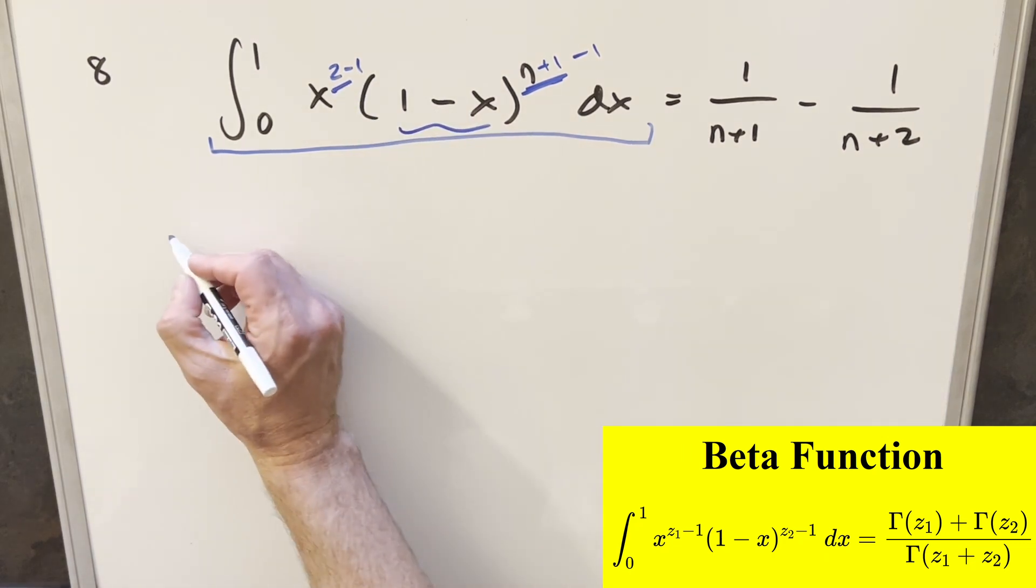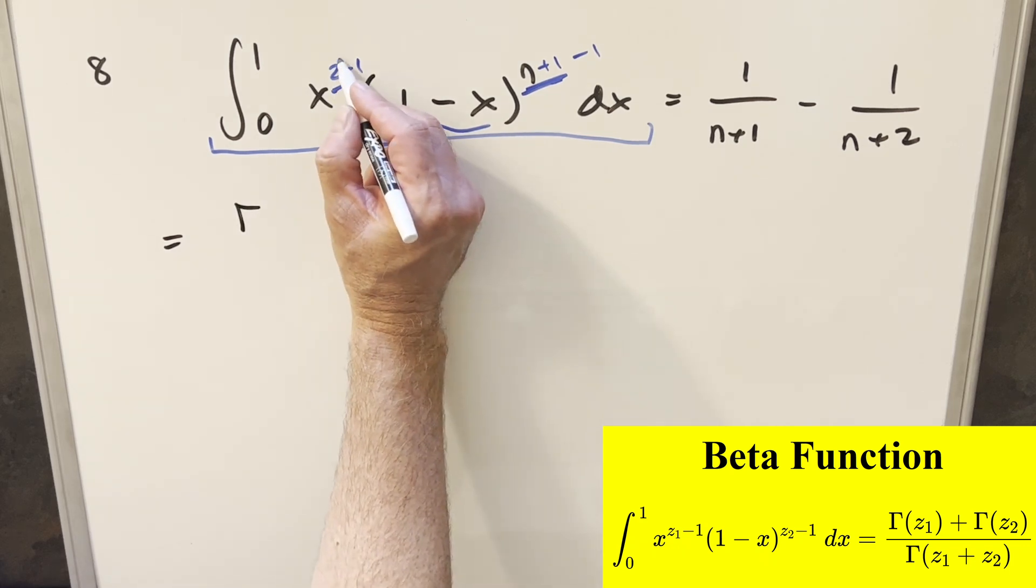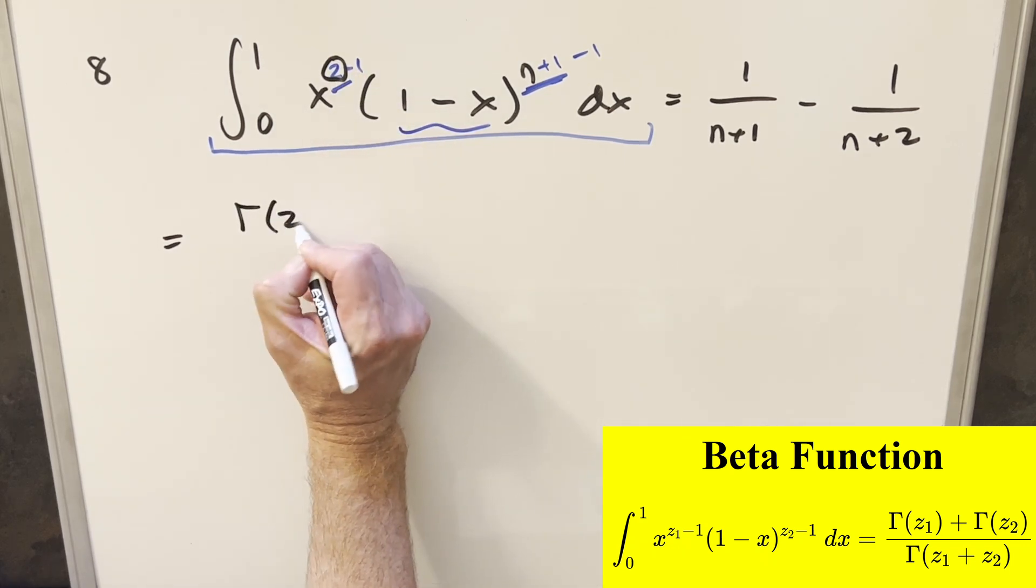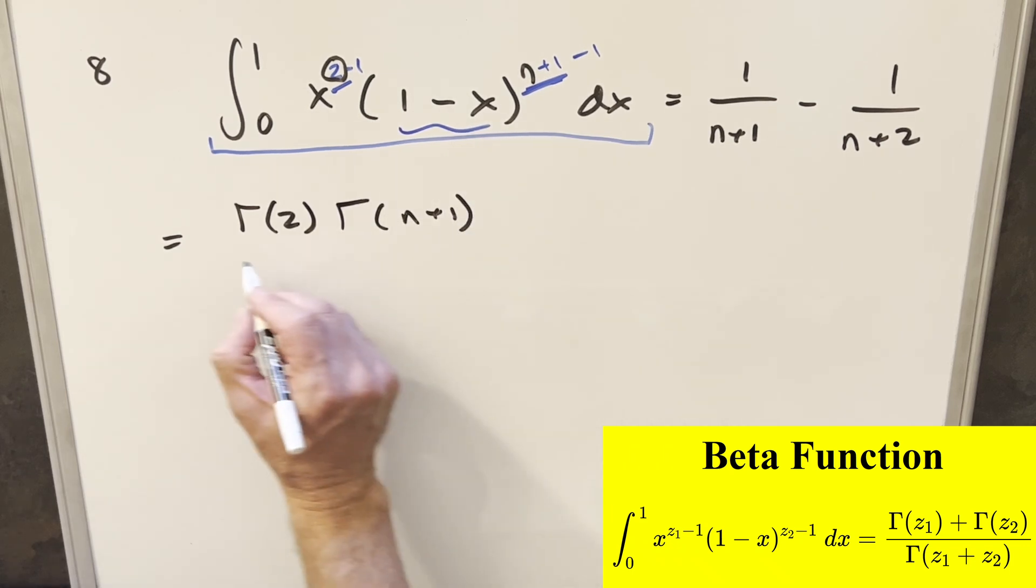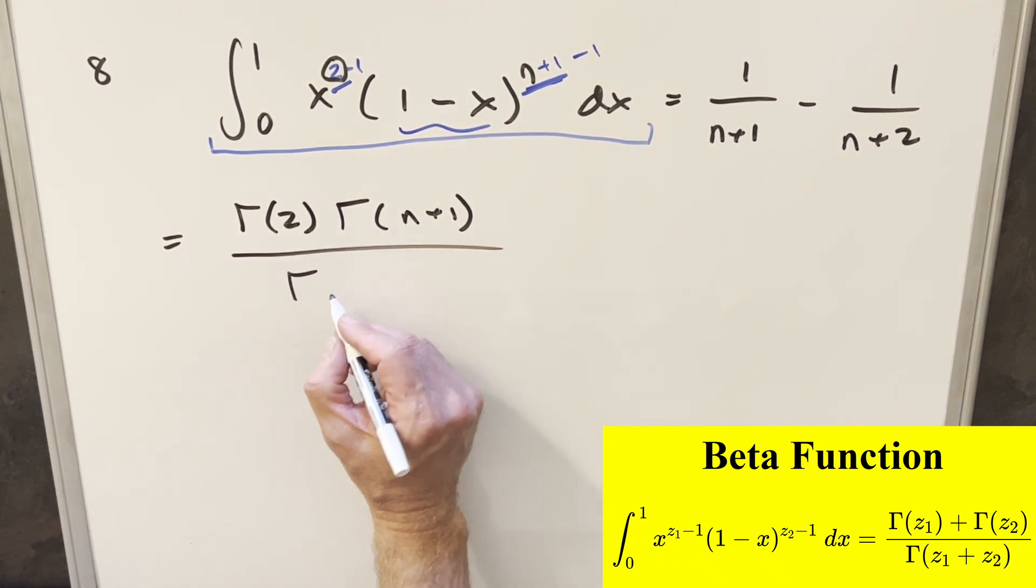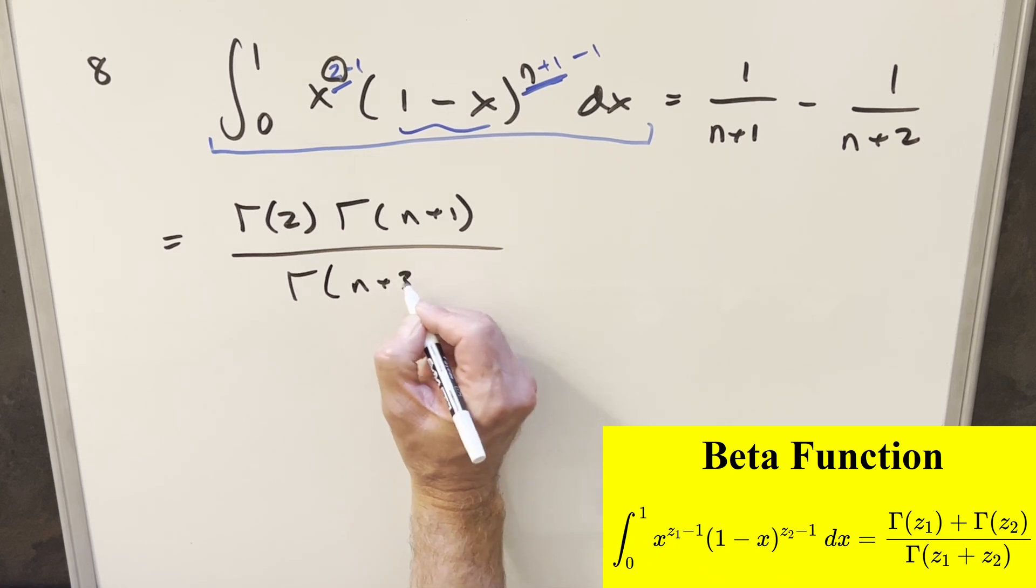So then we'll go right to our formula for the beta function on this. What we're going to have is we're going to use this first value, gamma of 2, times the second one, gamma of n plus 1 over here, and then over the sum of these. So this is going to be gamma of n plus 3.